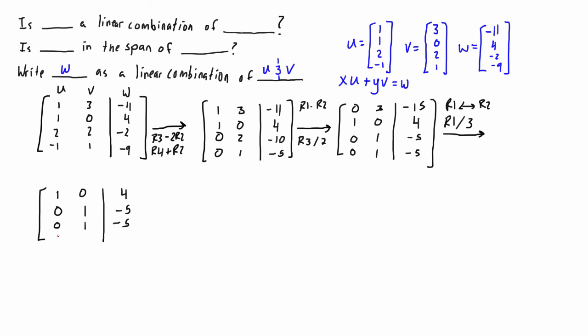The last thing that we want to do here is r3 minus r2 and r4 minus r2. That's going to keep the first two rows the same, so we get 1, 0, positive 4 and then 0, 1, negative 5, and then this stuff all becomes 0 because 1 minus 1 is 0 and those become 0 as well.